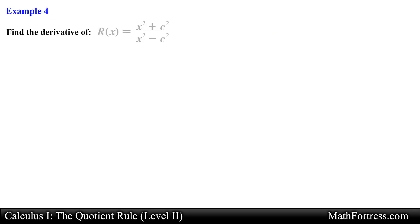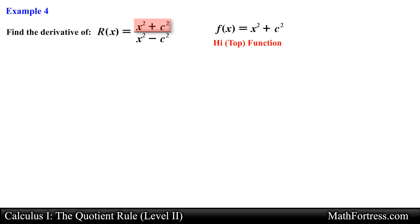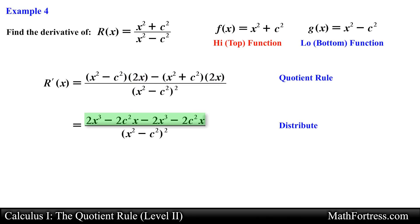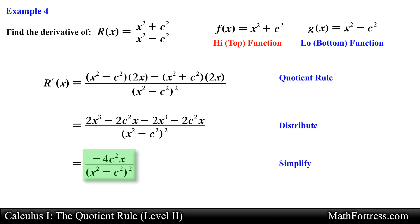Find the derivative of r equals the quantity x squared plus c squared over the quantity x squared minus c squared. Here c squared represents a constant, so we will treat it as such when applying differentiation rules. We will let the quantity x squared plus c squared be our high function and the quantity x squared minus c squared be our low function. Applying the quotient rule and keeping in mind that c squared is a constant, we then distribute terms in the numerator and collect like terms. The final derivative is equal to negative 4 times c squared times x, all over the quantity x squared minus c squared raised to the power of 2.